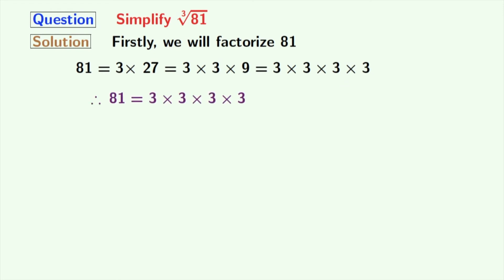So finally, we have 81 as the product of 4 number of 3s. Now, taking cube root on both sides, we get cube root of 81 is equal to cube root of 3 times 3 times 3 times 3.